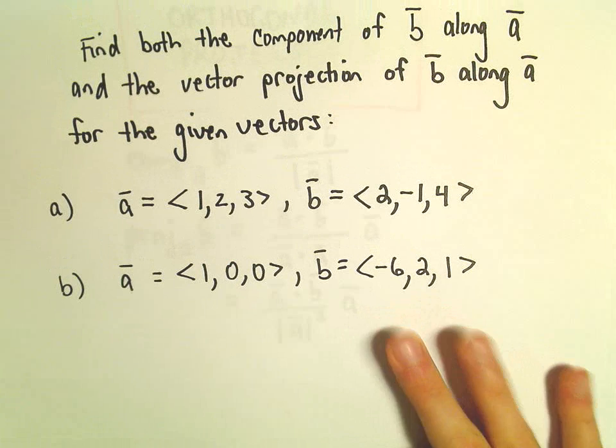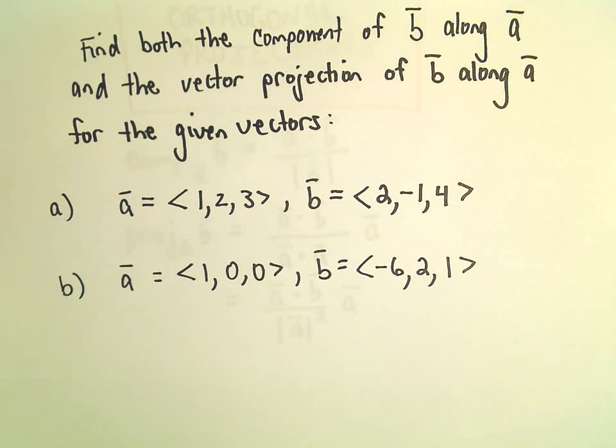Okay, so what we want to do is find both the component of B along A and also the vector projection of B along A for these given vectors.